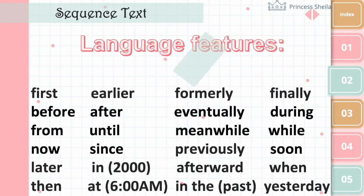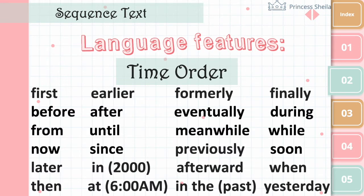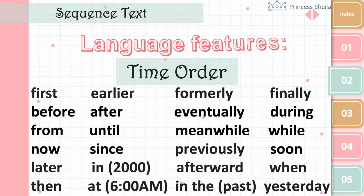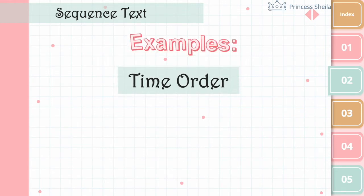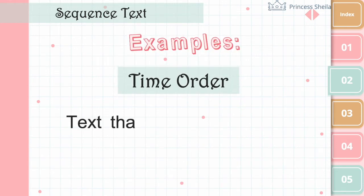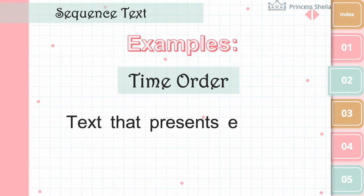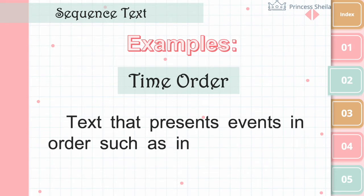Now, here are the language features or signal words of sequence text showing a time order of events. A time order text presents events in order, such as incident reports and historical topics.